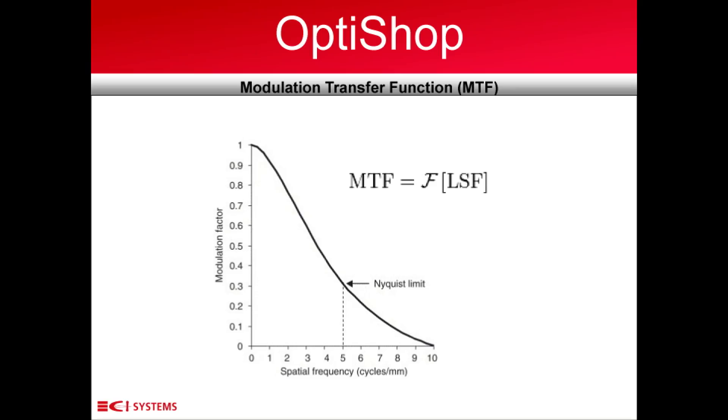The image produced by the unit under test is collected by either the scanning slit or the video imager. It is then analyzed and an LSF is produced from the image collected. A Fourier transformation is then applied to the LSF vector, producing the MTF results at discrete frequencies from which we build the MTF graph.